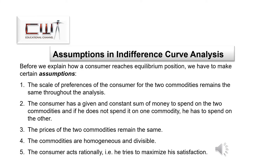Before explaining how a consumer reaches equilibrium, certain assumptions must be noted: the consumer's scale of preferences for the two commodities remains constant throughout the analysis; the consumer has a given and constant sum of money to spend on the two commodities; if he does not spend on one, he must spend on the other; the prices of the two commodities remain the same; the commodities are homogeneous and divisible; and the consumer acts rationally, seeking to maximize satisfaction with given resources.